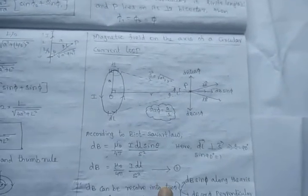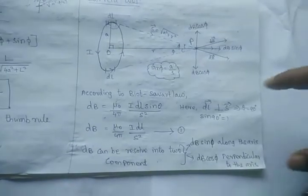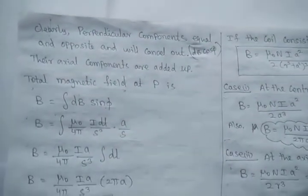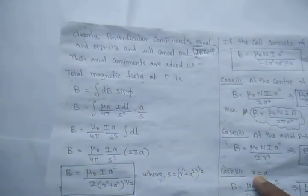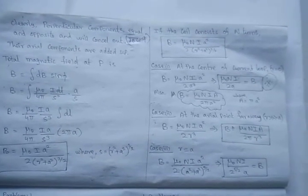The derivation for the magnetic field on the axis of the circular current loop is complete. By applying Biot-Savart law and substituting the values, we get dB, which is resolved into two components; only the axial component adds up. Substituting sinθ = A/S, we get B = μ₀ I A² / [2(R² + A²)^(3/2)], with three special cases. These derivations — Biot-Savart law, the infinite long wire, and the circular loop — are very important for exam purposes.